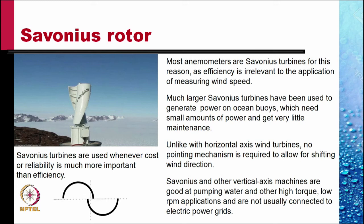One is the Savonius rotor. The schematic of a Savonius rotor is shown here. It is a vertical axis windmill. Most anemometers that measure the wind speed are Savonius turbines. These turbines are not very efficient but are very reliable and very inexpensive.